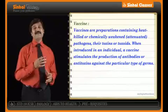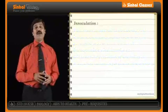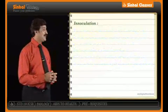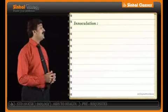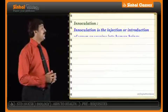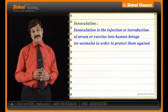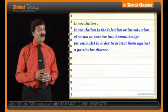Along with the word vaccine, we should know the word inoculation. Inoculation is an injection or introduction of serum or vaccine into human beings or animals in order to protect them against a particular disease. So now we know the words vaccine and inoculation.